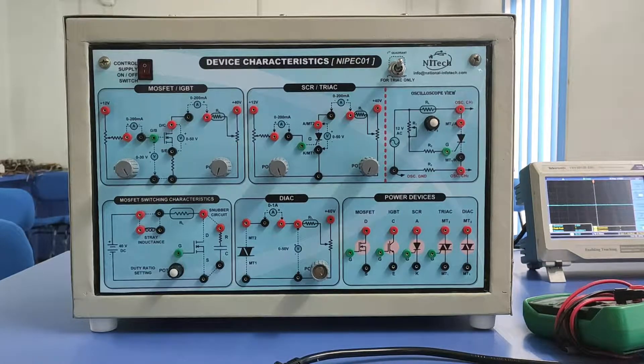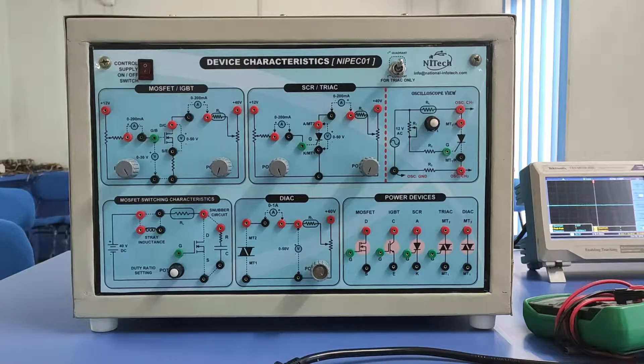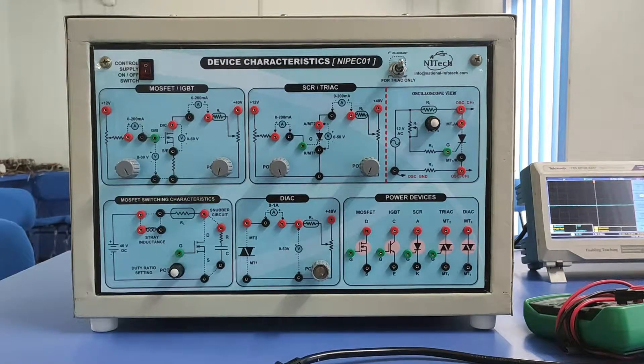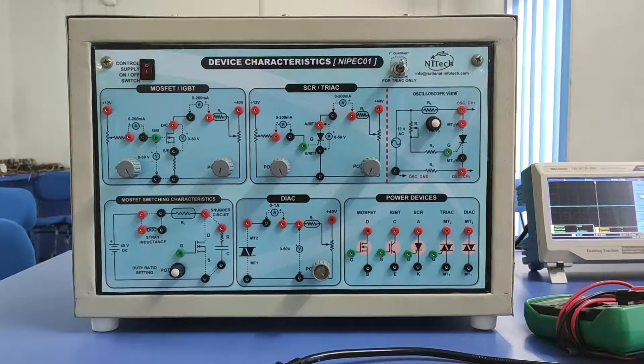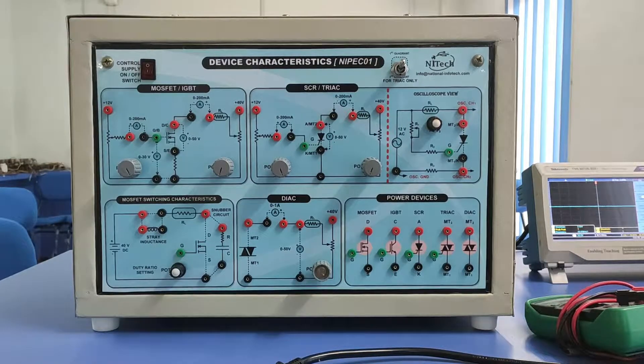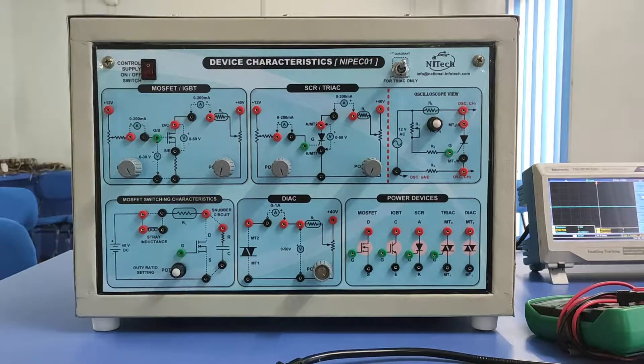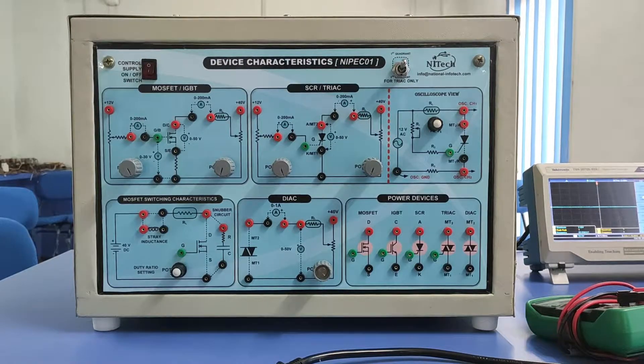Each circuit will be working for two devices like MOSFET and IGBT, so one circuit is common for them. Similarly, SCR and TRIAC, because those are current controlled devices, so a single firing circuit will be utilized to fire SCR and TRIAC.